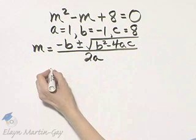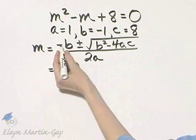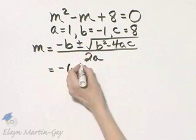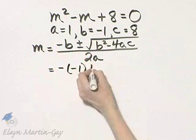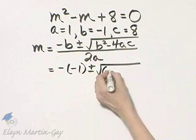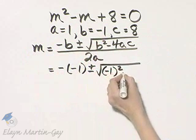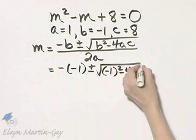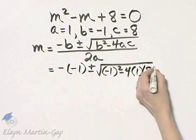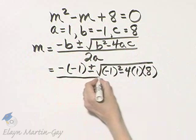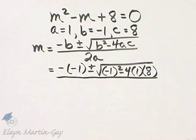Now, let's put in our replacement values. It's the opposite of B, and B itself is negative 1, so be very careful there, plus or minus the square root of B squared. That's negative 1 squared minus 4 times A is 1 times C is 8, and this is all over 2 times A is 1.